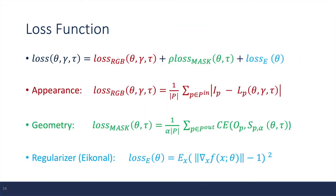So here is the loss function for the network, and it has three different terms. The first term is more concerned with the appearance. The second term is more concerned with the geometry. And the third term is the regularizer on the SDF.